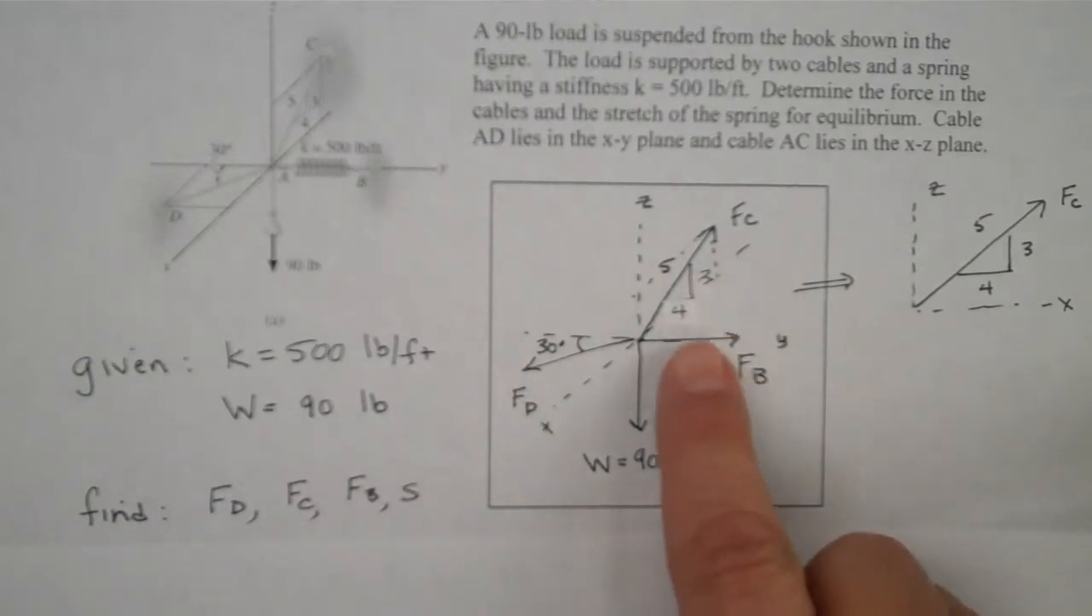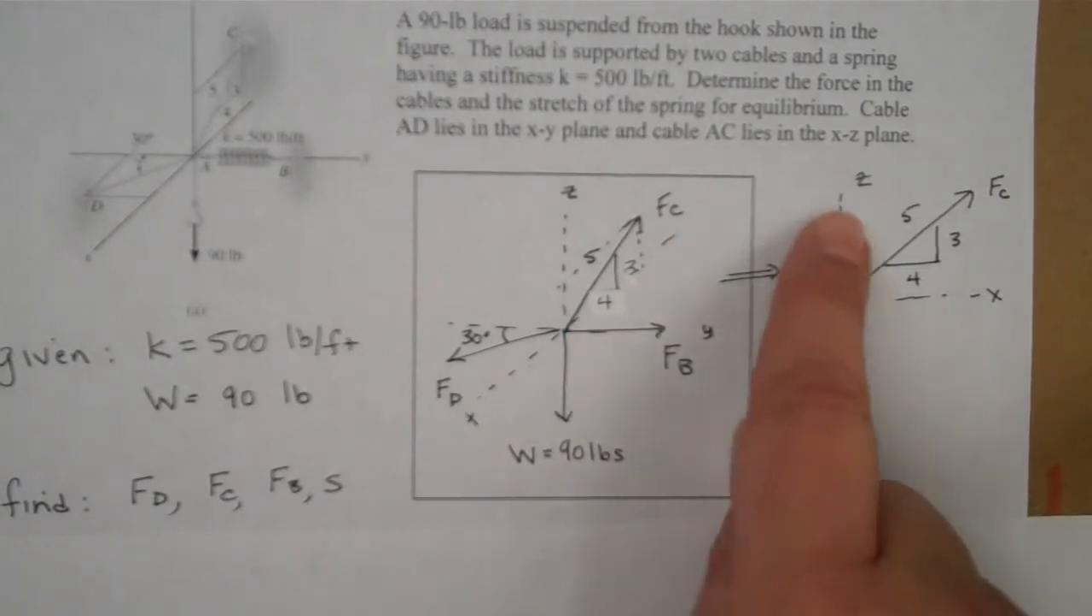Now for D we're given an angle along the XY plane. For force C we're given a 3-4-5 triangle. So in fact I've split out that one force to show that it's lying in the negative X and positive Z plane and that it's a 3-4-5 triangle. And we'll use that relationship rather than angles.